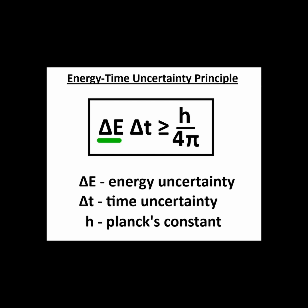If the energy used and the duration of its use is less than the threshold provided by the Planck constant, the process becomes hidden under the energy-time uncertainty principle.